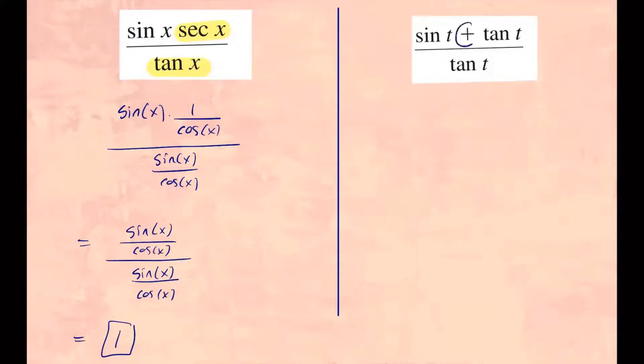For the second one, since I see a plus sign in the middle, I'll separate it into two fractions. So you have sine of t over tangent of t plus tangent of t over tangent of t. And then I rewrite tangent, only the first one right here. The second one, we know tangent over tangent.